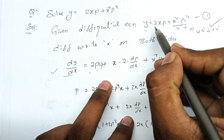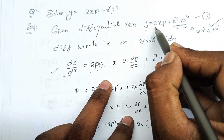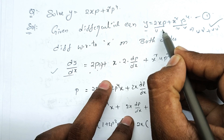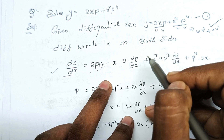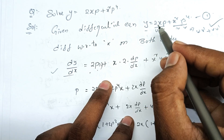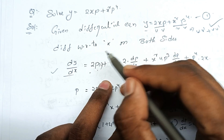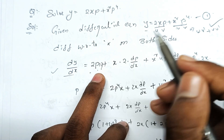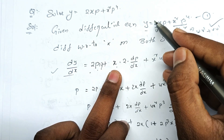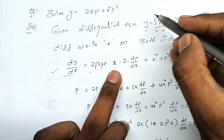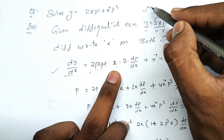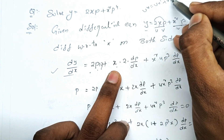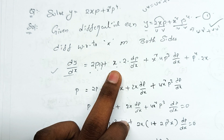We have 2xp. So we have the UV formula. 2p — x is the derivative of 1. Next, x is the derivative of 2p. And the UV formula is the formula.